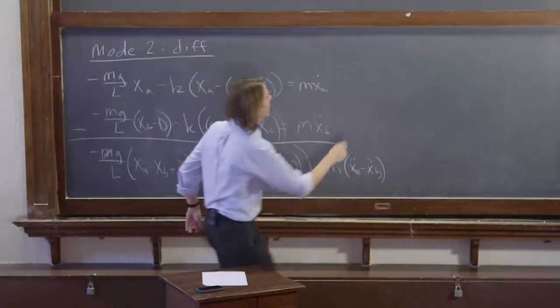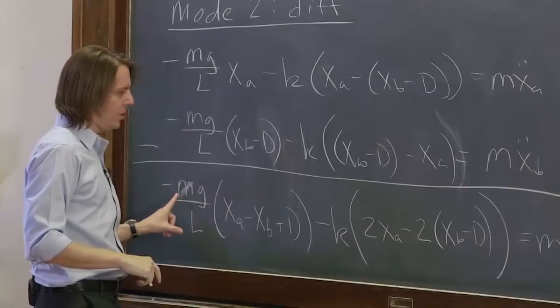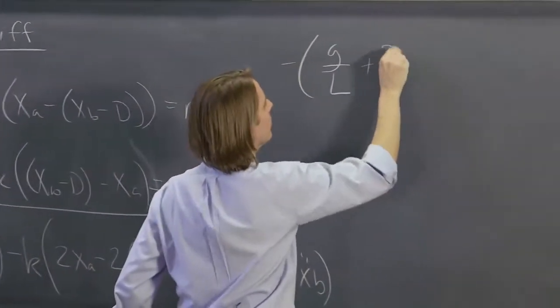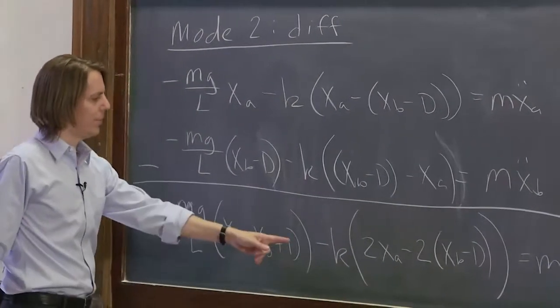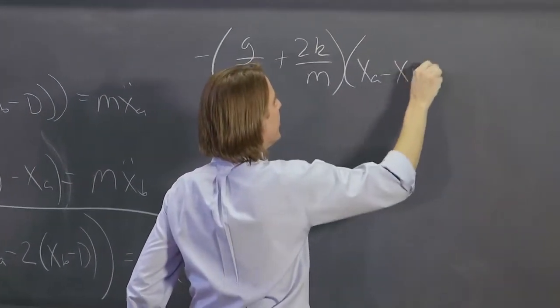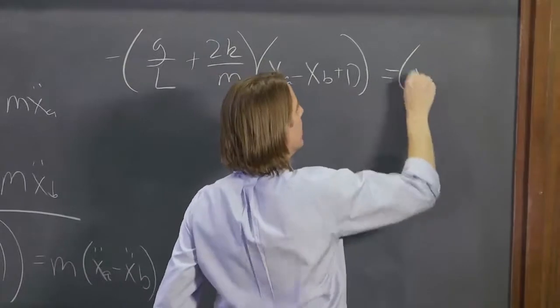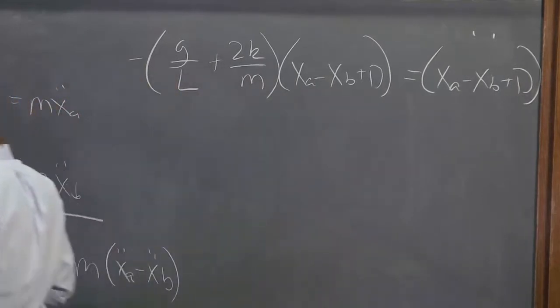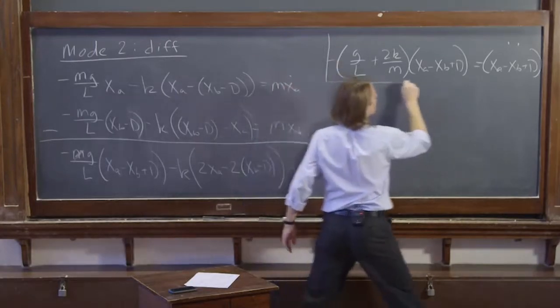So it's going to be minus g over L for that term, because the m went away. And then minus 2k over m for this term, because we divided through by an m. That's times the difference coordinate xA minus xB plus D. And that equals just the acceleration, xA minus xB plus D, double dot. And then that's our difference equation of motion.